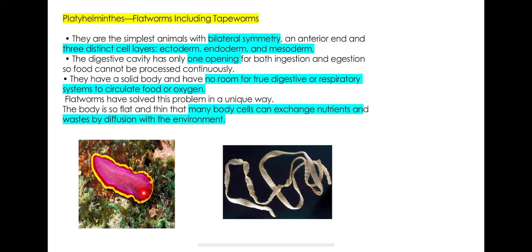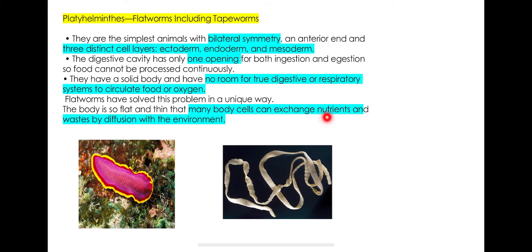They don't have a respiratory system, a true digestive system, or a circulatory system. So how do they get their nutrients and oxygen? Through the process of diffusion. That's why the body is so flat and thin — to help diffusion bring in nutrients and get rid of waste.